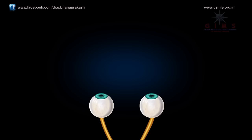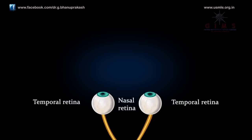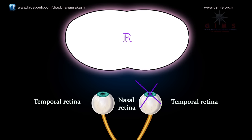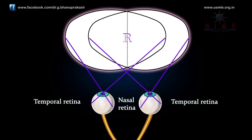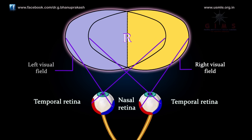The part of the world that you can see without moving your head or eyes is called your visual field. Each eye sees only a portion of this visual field. The visual field can be divided into right and left visual hemifields. The right visual hemifield is seen by the temporal left retina and nasal right retina, while the left visual hemifield is seen by the nasal left retina and the temporal right retina.